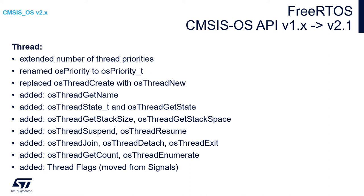Concerning task or thread processing between CMSIS-OS v1 and v2, there is an extended number of thread priorities. Instead of OS priority, there is OS priority_t. To create the task, we are not using the create function but the new function, as already mentioned. There are also many new functions added to manage tasks, like get name, state of the task, get state, get stack size — returning information about the current state of the task itself, which was not the case in CMSIS-OS v1.